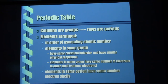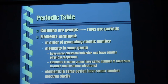Elements in the same group — in other words, in the same columns — have similar chemical behaviors and similar properties. They also have the same number of electrons in the outer shell, which means chemically they react kind of the same as other elements in that same group. And elements in the same period have the same number of electron shells.